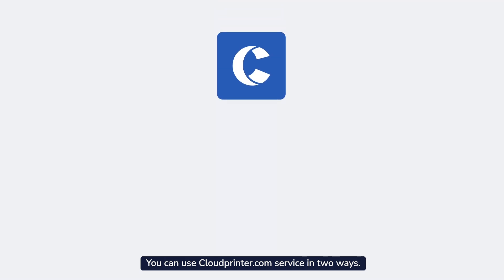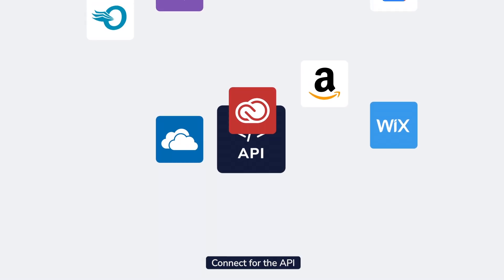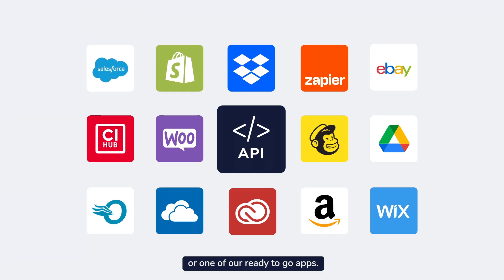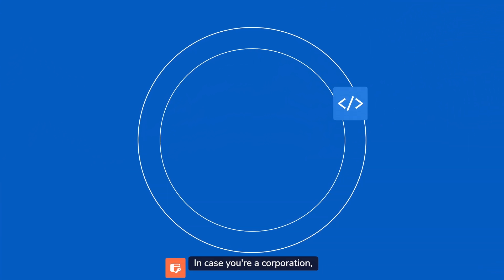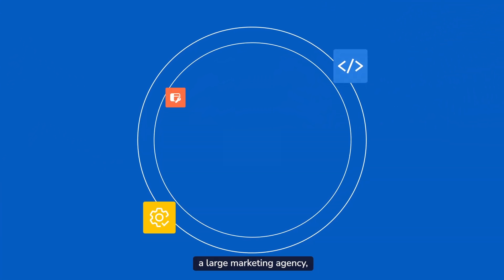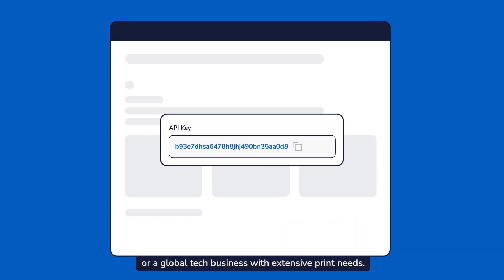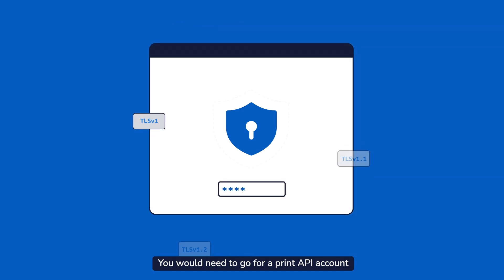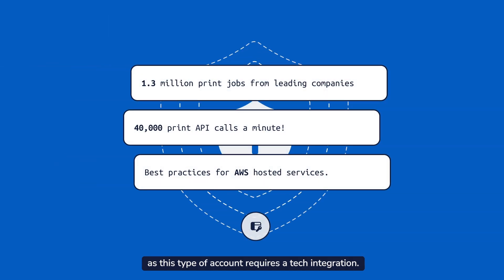You can use CloudPrinter.com service in two ways: connect via the API or one of our ready-to-go apps. In case you're a corporation, a large marketing agency, or a global tech business with extensive print needs, you would need to go for a print API account, as this type of account requires a tech integration.